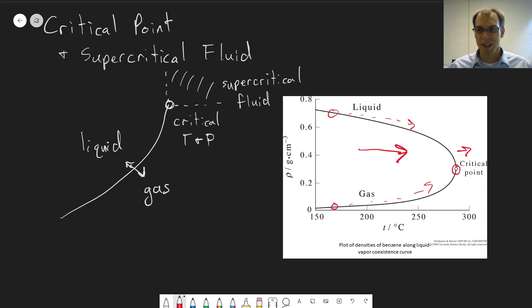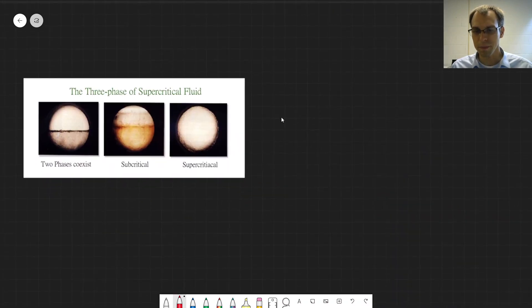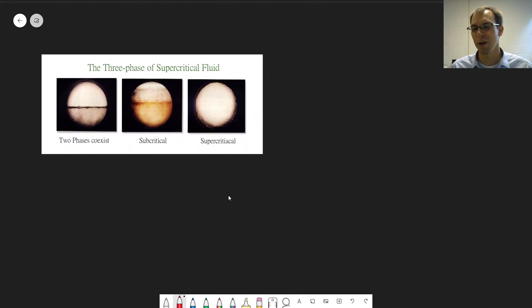To show what this might look like experimentally, you can actually take a substance near its critical point. We'll look at a video of this in class. I'll put a link to it as well on Moodle. You can watch this phase transition happen if you have things set up correctly.